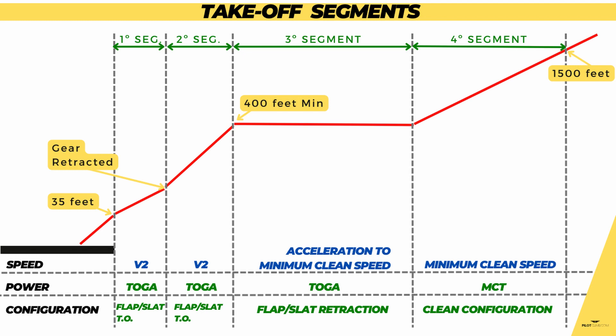Once your gear is retracted, you start the second take-off segment. The second take-off segment starts from gear retracted all the way up to a minimum acceleration height of 400 feet. This is a minimum acceleration height — many airlines change this to a higher acceleration height. For example, some airlines use 1000 feet above aerodrome level, but the minimum height at which you can start the acceleration for flap retraction is 400 feet.